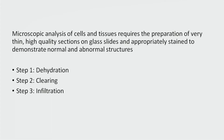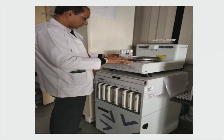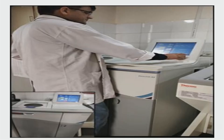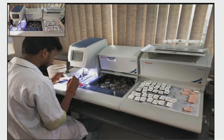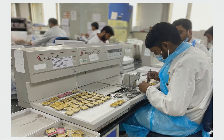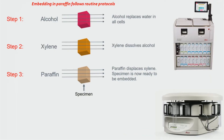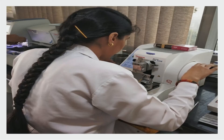After grossing, the tissue undergoes dehydration, clearing, and impregnation. These pictures show the histopathology lab at different stages of processing. Alcohol replaces the water in all cells, xylene dissolves the alcohol, and paraffin displaces the xylene. The specimen is now embedded and ready in paraffin blocks. These are the tissue processors used in this workflow.